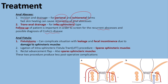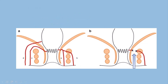For anal fistula, fistulotomy can be the treatment of choice, but note that it involves tearing of the inter-sphincteric muscles, which can lead to leakage and fecal incontinence. Two other methods are LIFT (Ligation of Intra-Sphincteric Fistula Track) and rectal advancement flap, both of which spare the sphincteric muscles and have fewer post-operative complications. In the LIFT procedure, the fistula is cut from between the sphincteric muscles, stopping leakage of anal content.